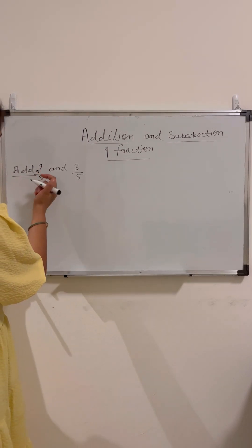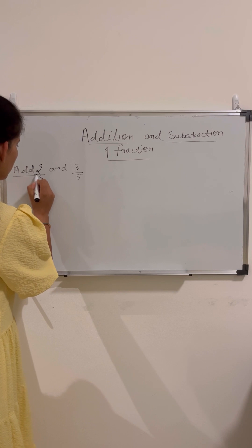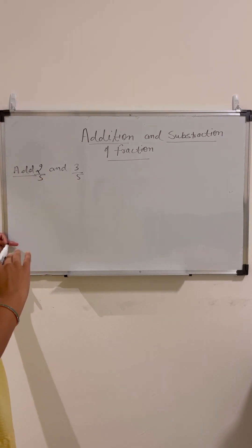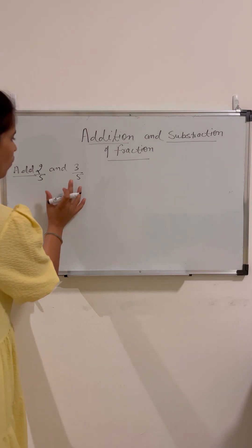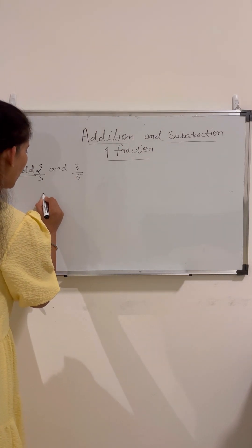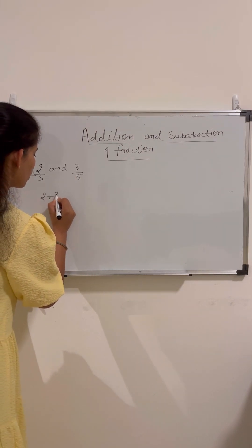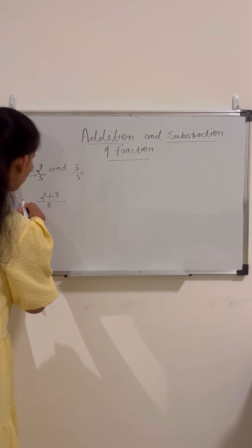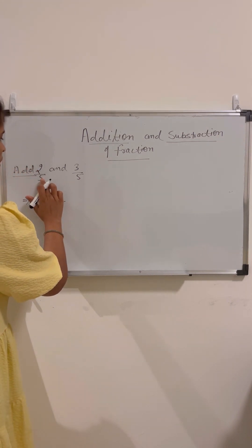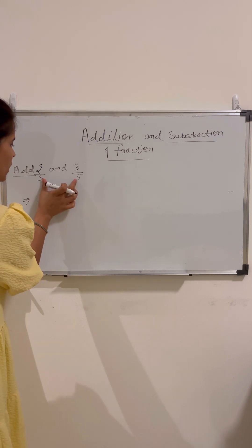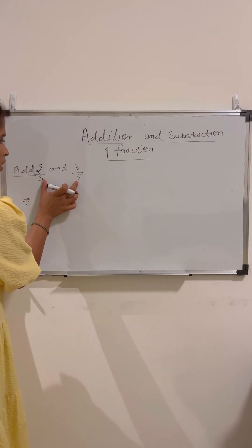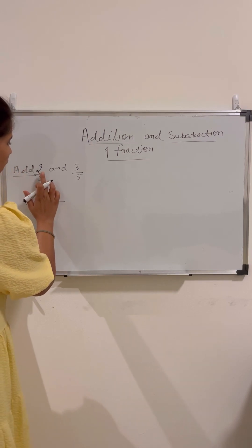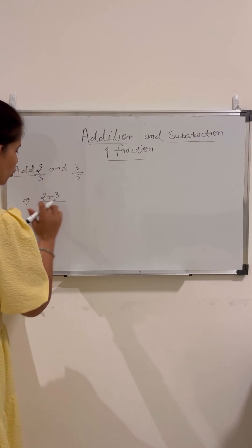We can see that these two fractions are like fractions. For this kind of fraction, what we do is we add the numerators but keep the denominator the same, because the LCM of these two denominators is 5. So we will keep the denominator the same and add the numerators.